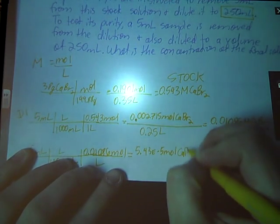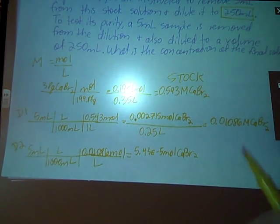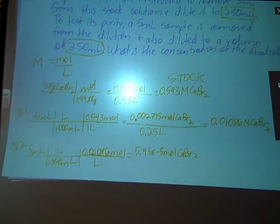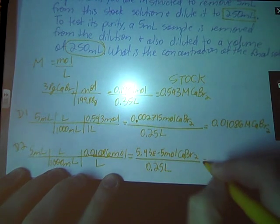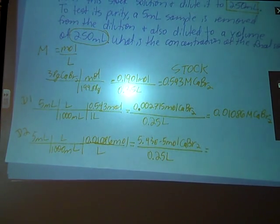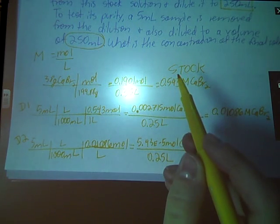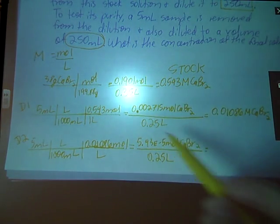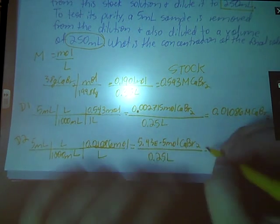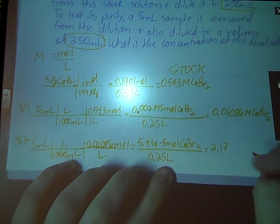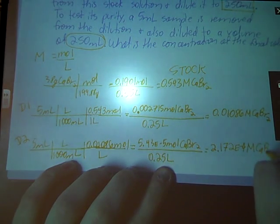Again, the problem tells me that we are diluting it to a volume of 250 milliliters. So this many moles is going to take up residence in 0.25 liters of solution. So my final answer here, what is the concentration of the final solution? Okay. So that's the third one. We had a stock, we drew up 5 milliliters, diluted it to 250. Here's my second solution, took 5 milliliters out of that, diluted it to 250. And my final solution has a concentration of 2.172 times 10 to the negative fourth molar calcium bromide. So that's a pretty weak solution, not a whole lot in there. But that's how you approach serial dilution problems.